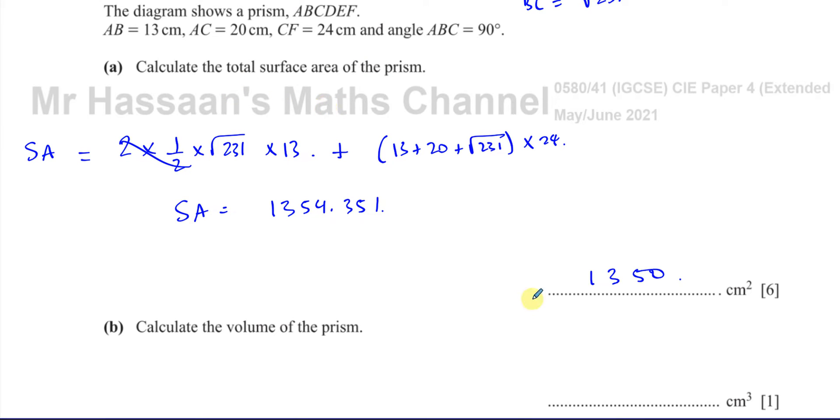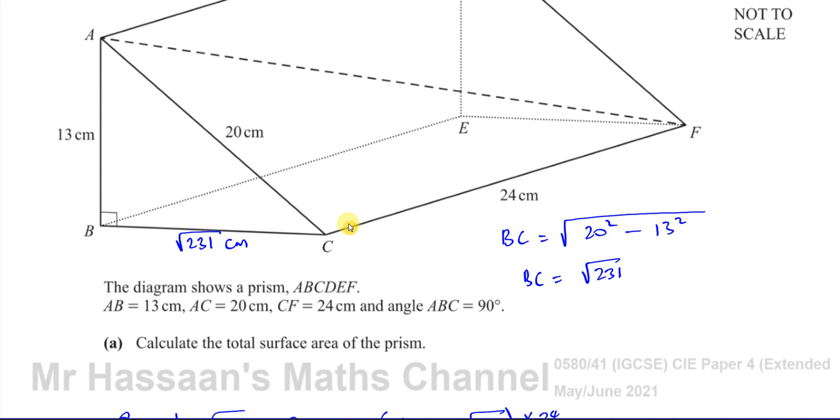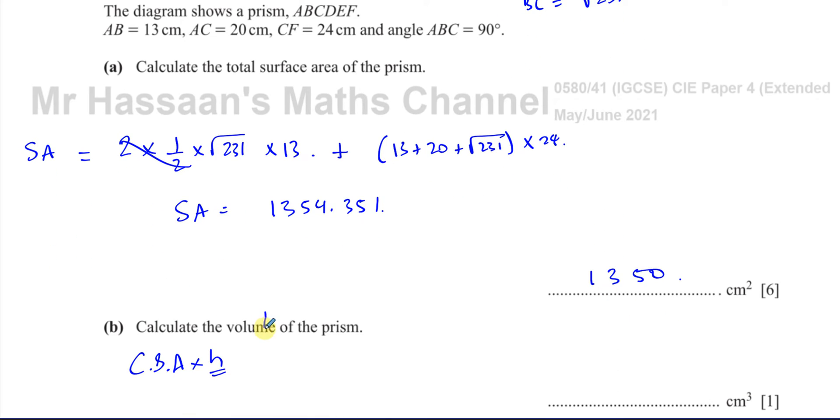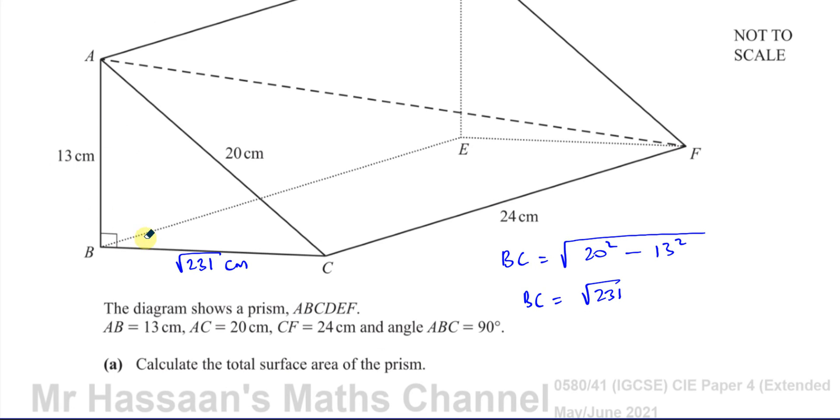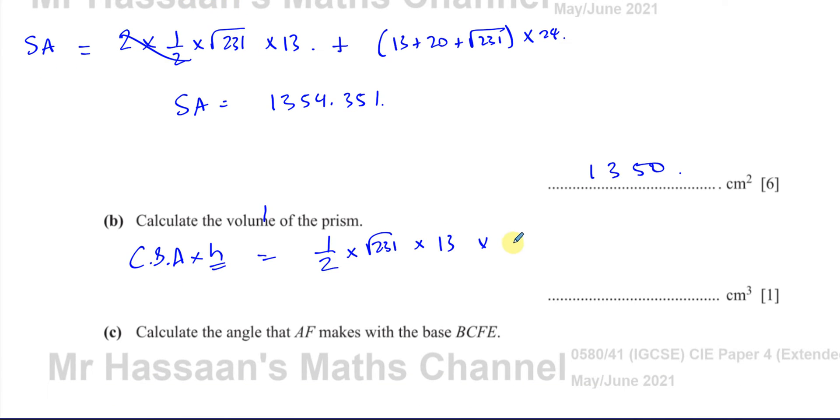Then it says find the volume of the prism. Now the volume of the prism is the cross-sectional area times the height, and the height means how deep it is. So it's basically the area of one of these triangles times 24. So it's a half times the base, which is root 231, times the height, which is 13. Half times the base times the height, that's the area of the cross-section. And then we have to multiply by how deep it is, which is 24.